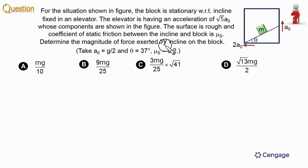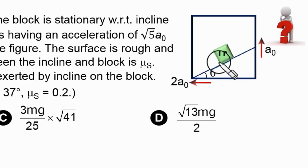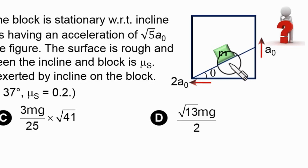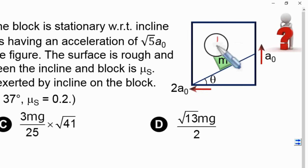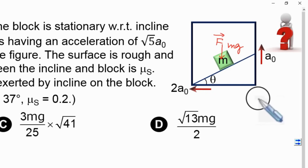We need to calculate the magnitude of the force exerted by the incline on the block. This block is in contact with the incline surface, so the contact force between the block and incline surface is the resultant of the normal reaction and friction force. The other force acting on the block is only the weight, acting in the downward direction: small mg.